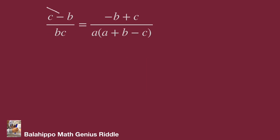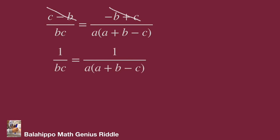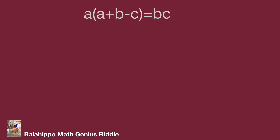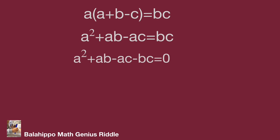Next, eliminate (c minus b) from both sides of the equation. This becomes: 1 over bc equal to 1 over a times (a plus b minus c). Adjusting and moving bc from the right to the left, the equation becomes: a squared plus ab minus ac minus bc equal to zero.